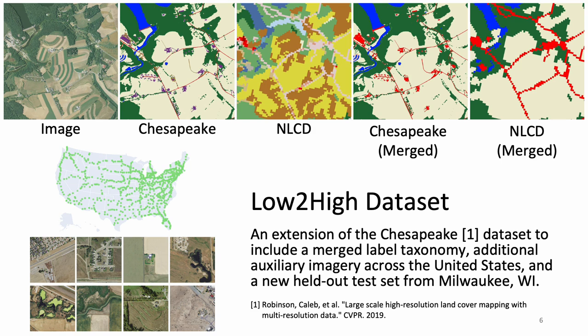To support our experiments, we introduced the low-to-high dataset, an extension of the Chesapeake dataset, to address the resolution mismatch problem as well as supporting self-supervised learning. We show example labels from our merged label taxonomy above, along with example images from the auxiliary dataset on the left.